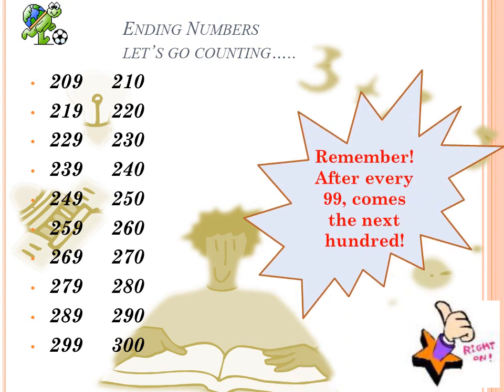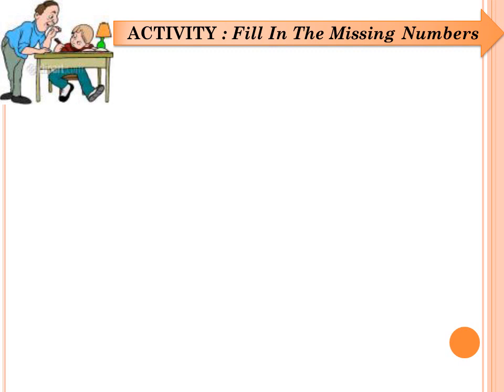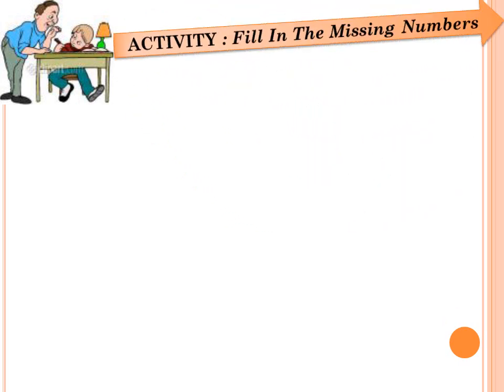Remember, after every 99 comes the next 100. That is why we have 299 being followed by 300. Now let us go on to the activity in this lesson. The instruction is: fill in the missing numbers.